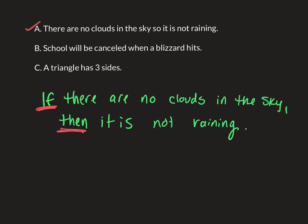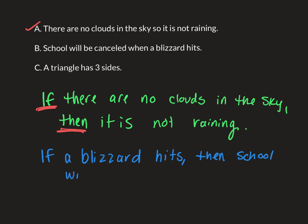Let's move on to b: school will be canceled when a blizzard hits. You can say — and you don't have to necessarily do it in the same order that the sentence starts in — if a blizzard hits, then school will be canceled.